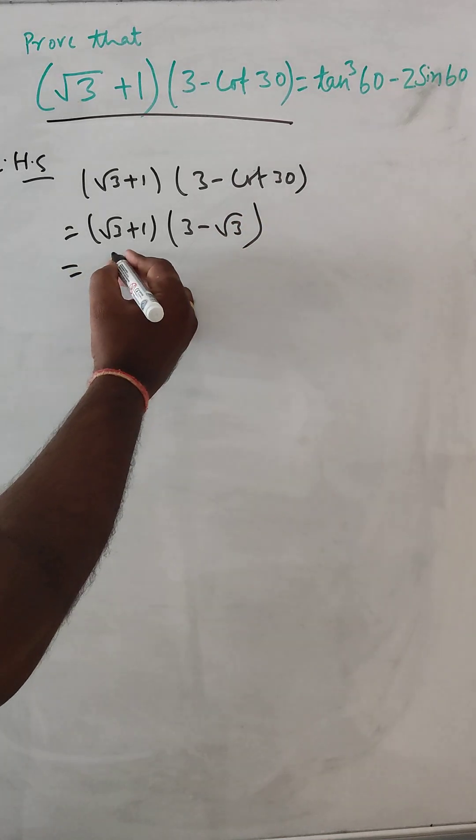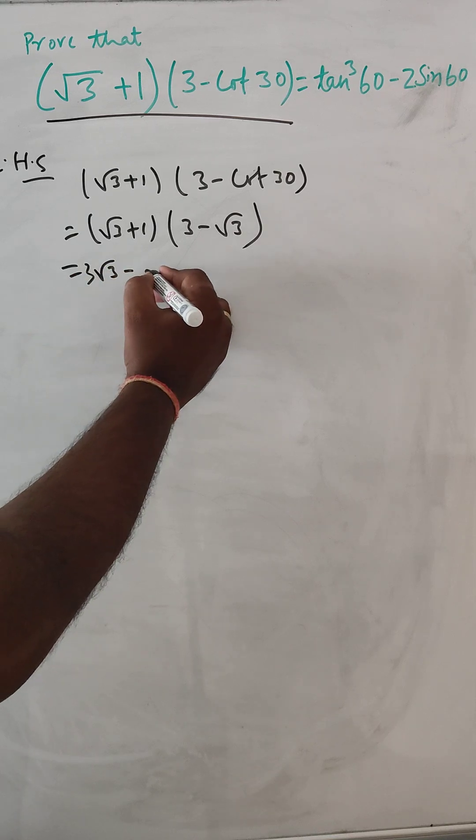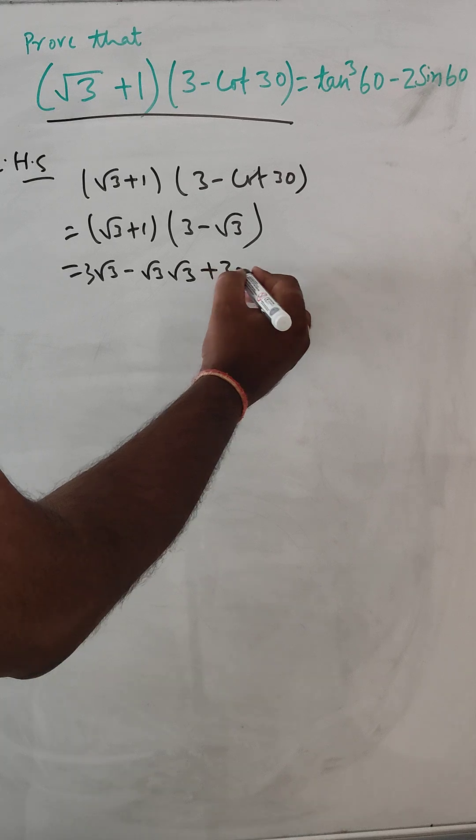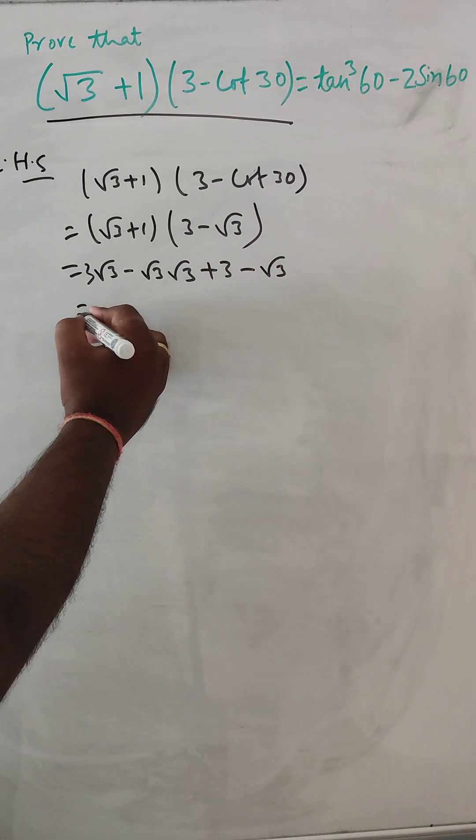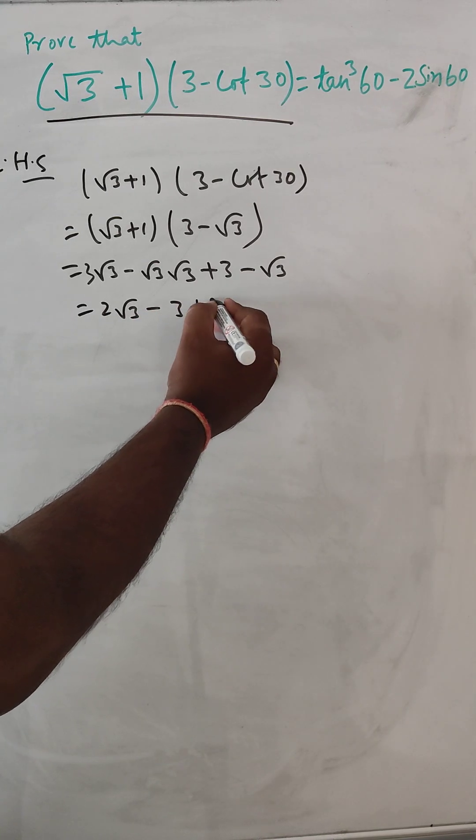So if we expand this, root 3 into 3 minus root 3 into 3 plus 3 minus root 3. Then this is 2 root 3 minus 3 plus 3.